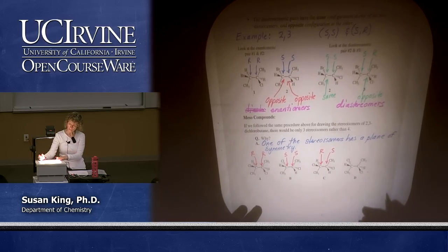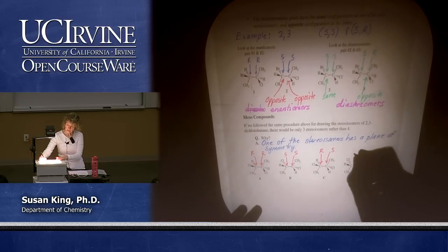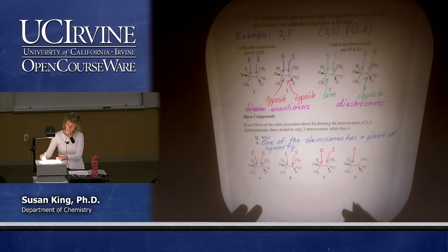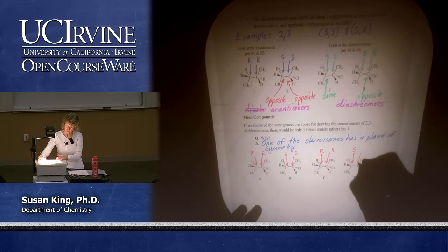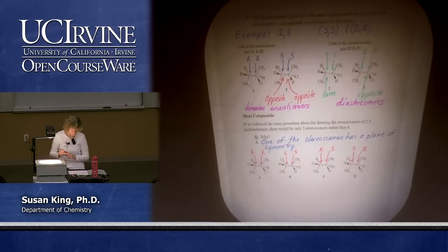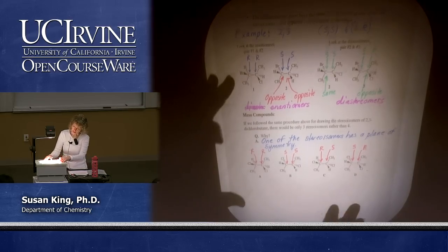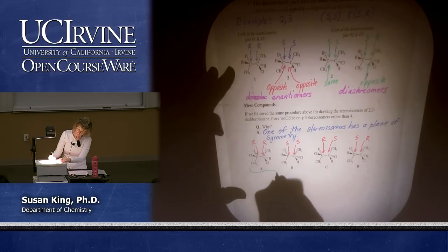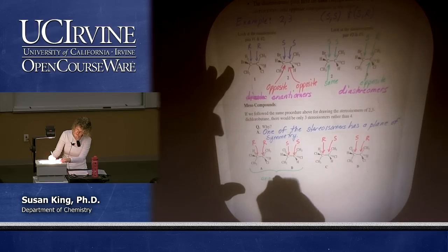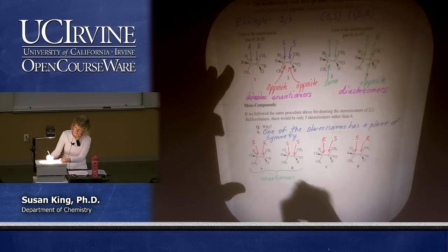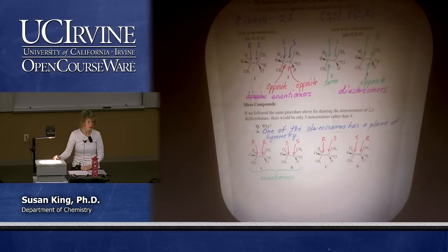And the left carbon here is S, and this one is R. It turns out that these two are enantiomers, just as we would expect. You would probably expect C and D to be enantiomers but they actually aren't.